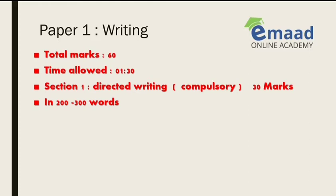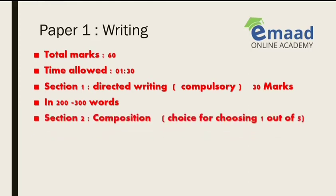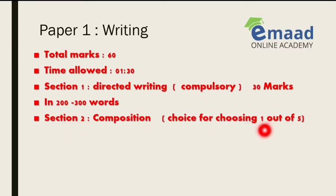In the directed writing section, you will be given a particular situation and specific directions to follow. Writing too much unnecessary information beyond 300 words wastes your time, and writing fewer than 200 words will cost you marks. Section 2 is Composition, where you have a choice of five topics and you can choose one to write about. In directed writing, the question is compulsory — there is no choice. Composition carries 30 marks, just like Section 1.